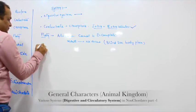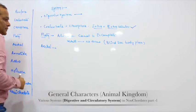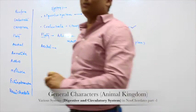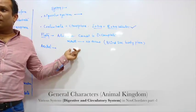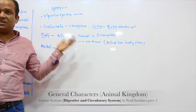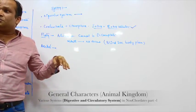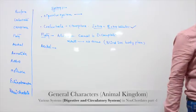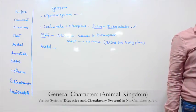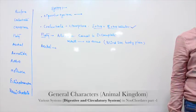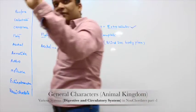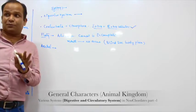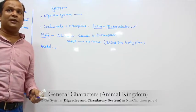From Aschelminthes onwards the canal is complete. But in Platyhelminthes, if we look deeper, there is one example — tapeworm — Taenia solium. In the tapeworm, there is no digestive system at all. It lives in the intestine, and it only does absorption directly from the surface. So in case of Taenia solium, the digestive system is even absent.